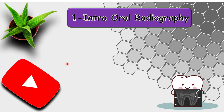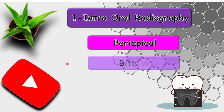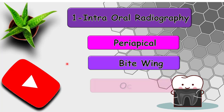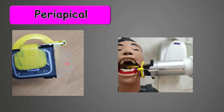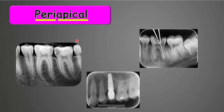Intraoral radiographs include periapical radiography, bite wings, and occlusal radiography. In periapical radiography, the film is placed inside a holder and positioned behind the lower arch teeth — so it is an intraoral radiography. 'Peri' means around, 'apical' means the apex, so with periapical radiography you can see the entire tooth — crown, roots, and surrounding bone.